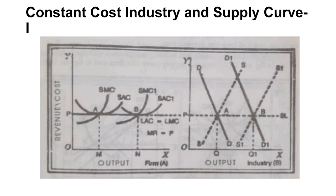When we join points A and B, the new supply curve of the industry is visible. It is a horizontal line parallel to the X-axis, shown as a dotted line on screen. So in the constant cost industry, when output increases, there is no change in the price and average cost of the firm. The supply curve of the industry is a horizontal line parallel to the X-axis.